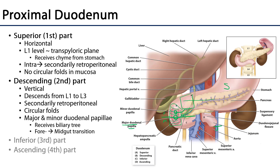The circular folds, or plicae circulares, are very strong circular-shaped eruptions of the mucosa that serve two roles: the first is to slow the movement of material through the duodenum, and the second is to increase the total amount of surface area, which allows for greater absorption.